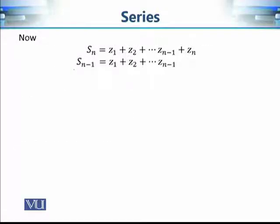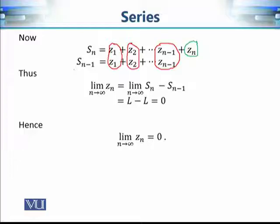If we take the difference of sₙ and sₙ₋₁, the first through (n−1) terms cancel each other out, and we are left with zₙ. So, the limit as n approaches infinity of zₙ equals the limit as n approaches infinity of sₙ − sₙ₋₁.